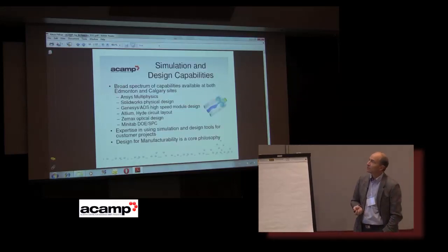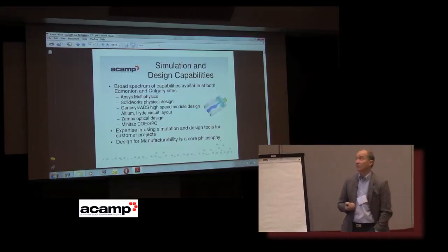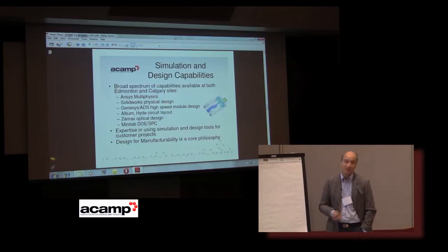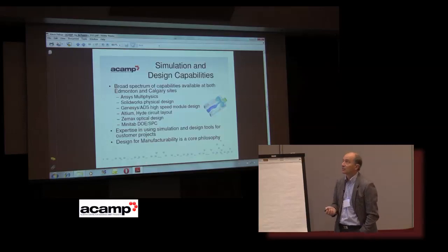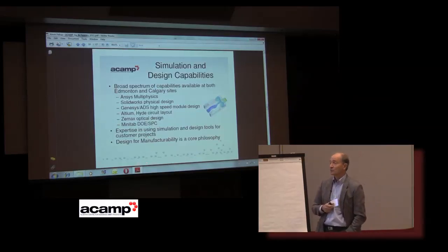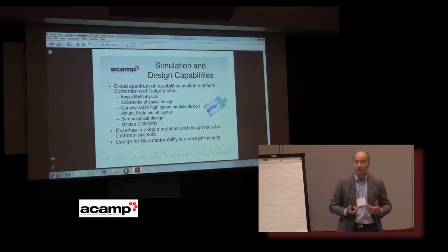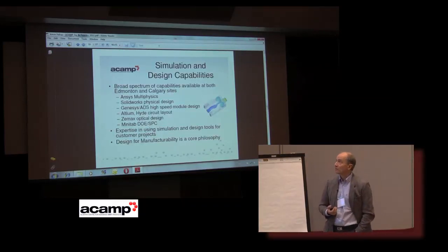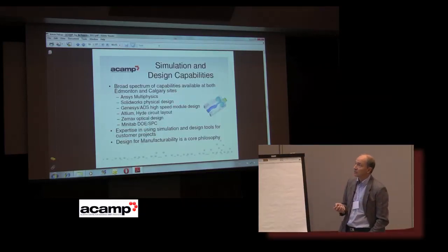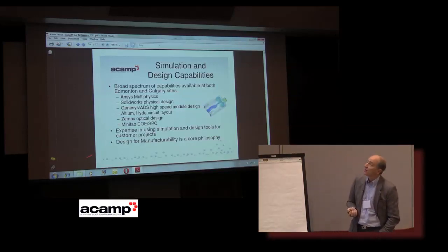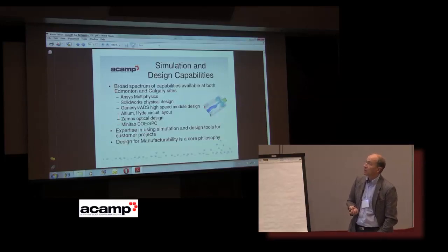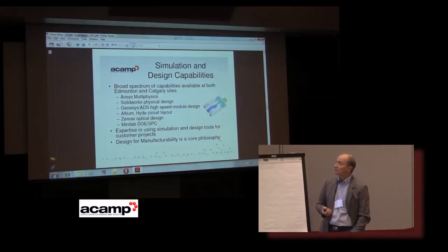Some of the key things we do include simulation and design, which we think is a very important part of design for manufacturability — really understanding your design before you even try and build something. We have access to ANSYS Multiphysics, which is probably one of the best multiphysics packages in the world, letting us do a very thorough job of simulating a product before we even try to build it. We can do 3D visualisation and design using SOLIDWORKS, and we have access to optical design capabilities and high-speed electronic design as well.